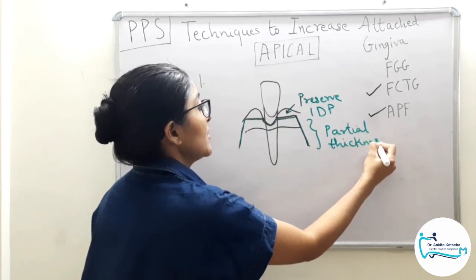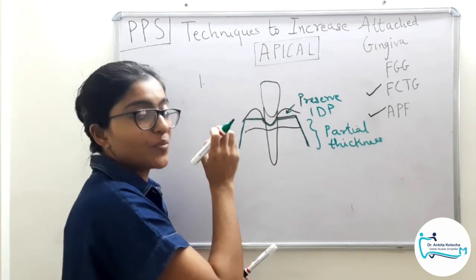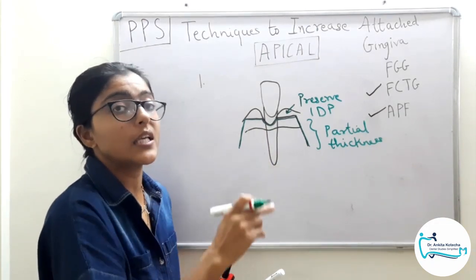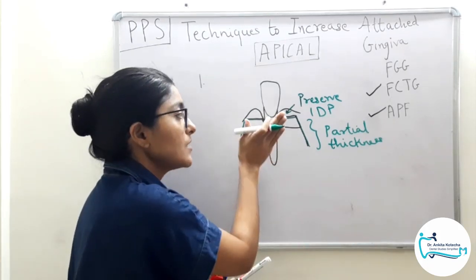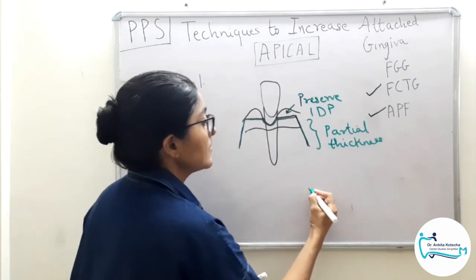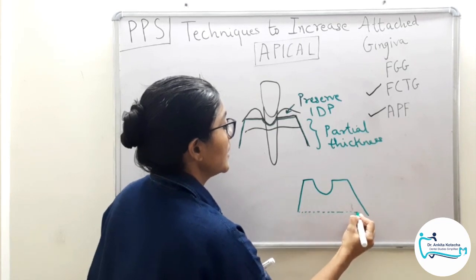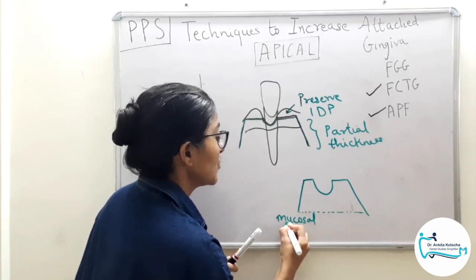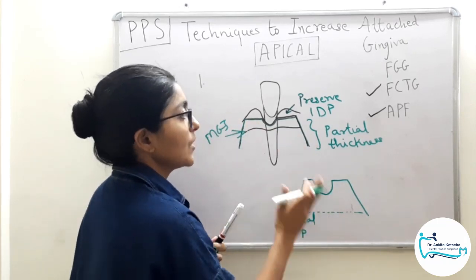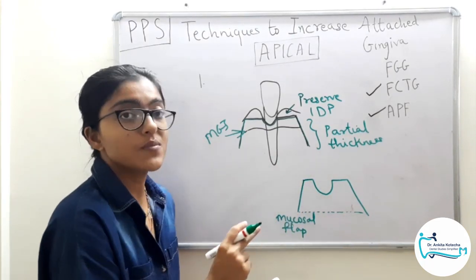This is the flap design which has to be reflected — again, partial thickness flap reflection. Upon reflection, just hold the mucosal flap in the apical position. Unlike with free gingival graft, we are not suturing it apically; we are simply keeping it reflected apically until we transfer the connective tissue graft to the recipient site. This reflected flap is a mucosal flap, and the connective tissue graft will be transferred onto this area.